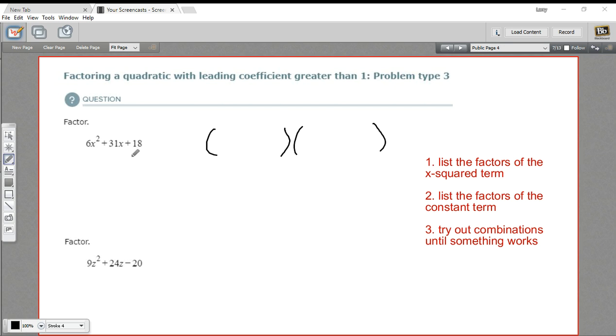The first step on this one is I notice the signs are all positive. So in this case, I'm going to have plus and plus. Multiply two positives to get this positive 18, add up two positives to get this positive number here. So a plus and a plus are the only way to do that.